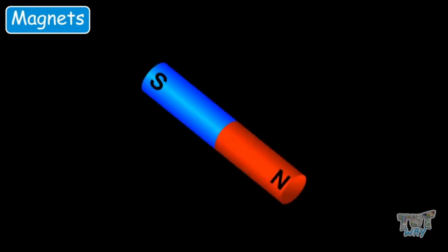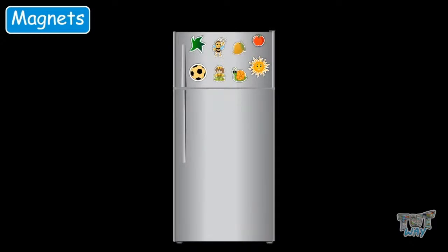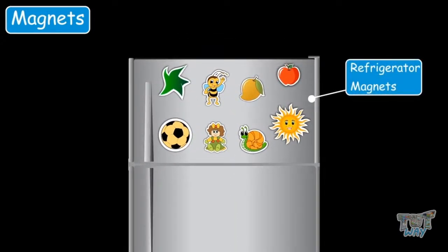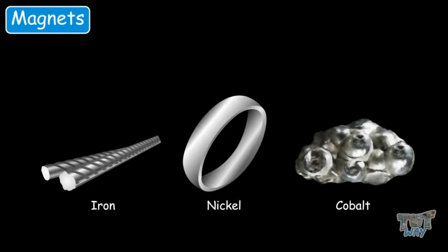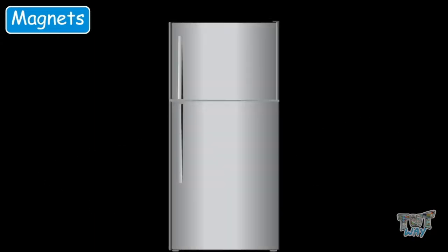All types of magnets have a north pole and a south pole. These are examples of refrigerator magnets. They are very popular and come in a variety of sizes and shapes. The basic characteristic of magnets is attraction towards magnetic materials — materials made up of iron, nickel or cobalt. And this is why magnets stick to the door of the refrigerator, because the door is made up of one of these materials.